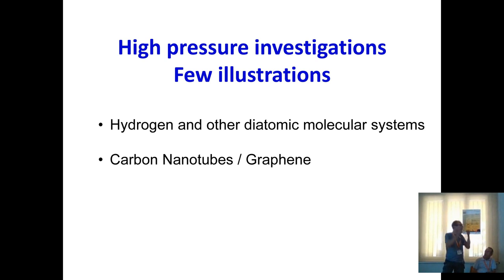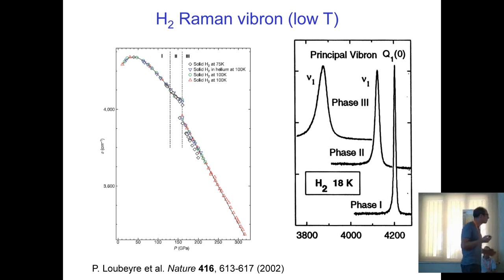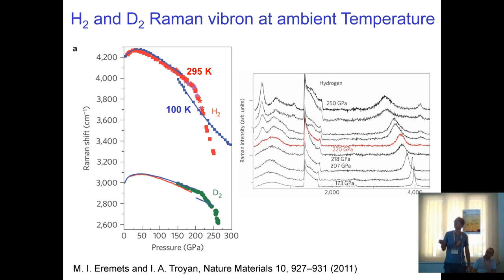As a first example, hydrogen under pressure: the vibron can be followed by Raman spectroscopy. The vibron frequency first increases slightly then decreases with pressure. Early on, this decrease was interpreted as evidence of approaching metallization and dissociation of hydrogen, now predicted around 450 GPa. However, it actually arises from quadrupolar interactions between molecules. The vibron is useful for identifying phase transitions — between phases II and III it is very clear.